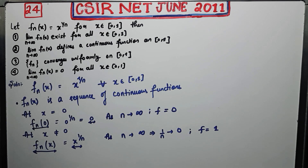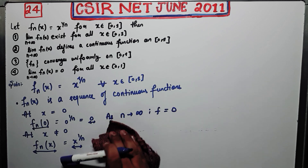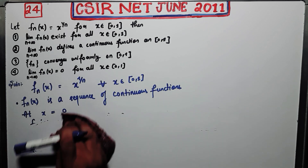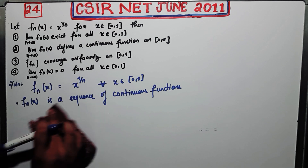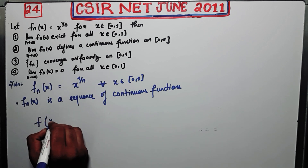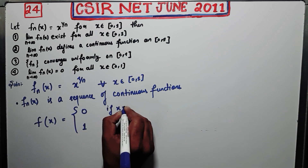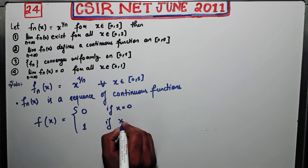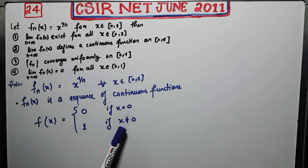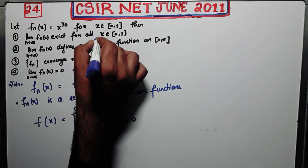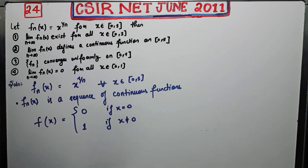So I will directly write the limiting function. The pointwise limiting function is: f(x) = 0 if x = 0, and f(x) = 1 if x is nonzero and inside the domain [0,1]. The first option says the limit as n goes to infinity exists for all x — since we computed it for every fixed x, it exists. So option one is correct.